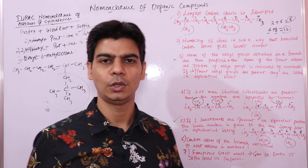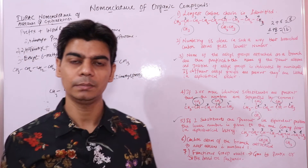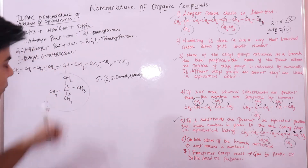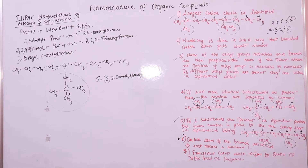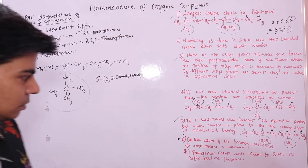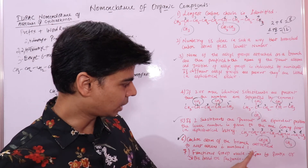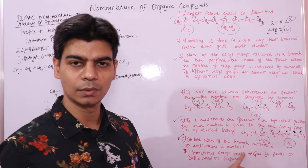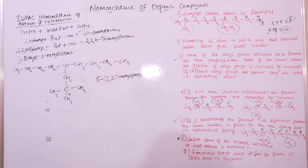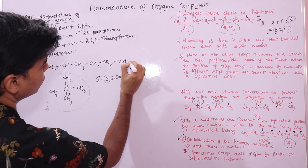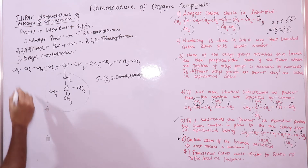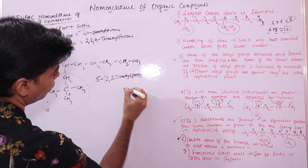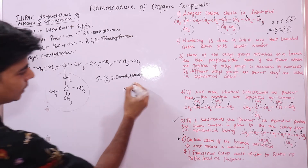This is a continuation of our previous video lecture where we were looking at the rules of naming branched chain alkanes. We were at rule six, where we were looking at carbon atoms — a carbon chain that has a side chain carbon atom of the branch attached to the root alkane, numbered one. The root alkane here is nonane.